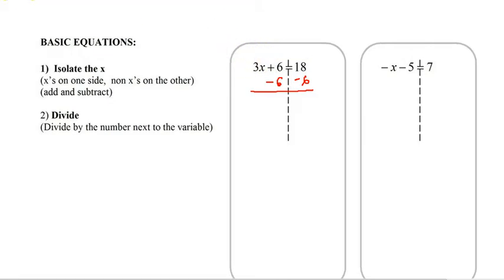So by subtracting the 6, we now have just 3 x's. And then 18 minus 6 is 12. Next step is to divide.